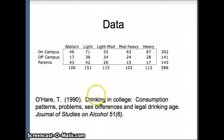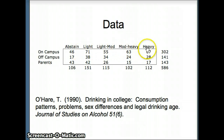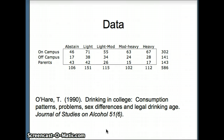Here's our data. We have three types of college students: students who live on campus, students who live by themselves off campus, or students who live with their parents. We have five categories of drinking: abstainers, light drinkers, light to moderate drinkers, moderate to heavy drinkers, and heavy drinkers. This data was published in the article cited at the bottom of the slide. To answer whether there's a relationship between these two variables, we're going to compute the Chi-Square statistic using Excel.